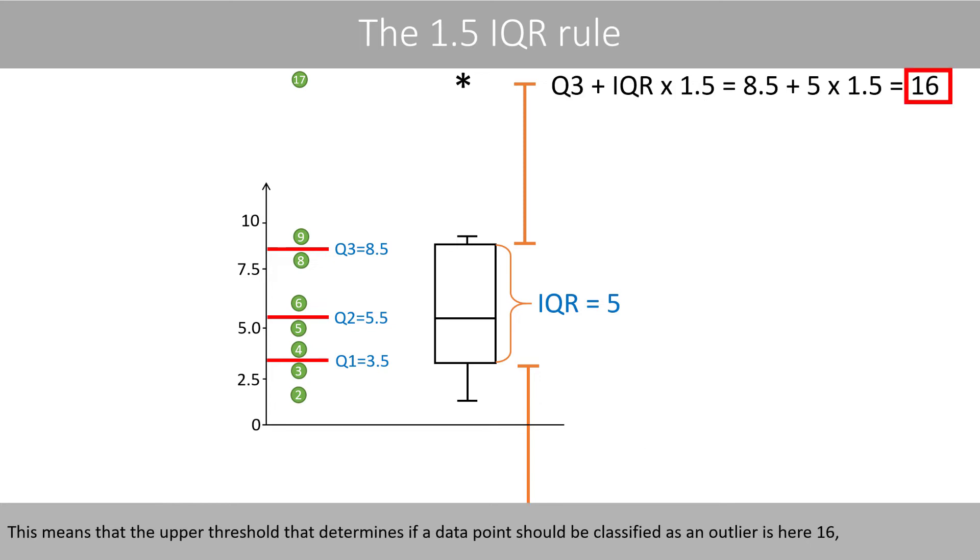This means that the upper threshold that determines if a datapoint should be classified as an outlier is here 16. Because any datapoint that is more than 1.5 interquartile range above the third quartile is classified as an outlier by the box plot. Since 17 is greater than 16, this datapoint will be denoted with an asterisk to indicate that it is an outlier.